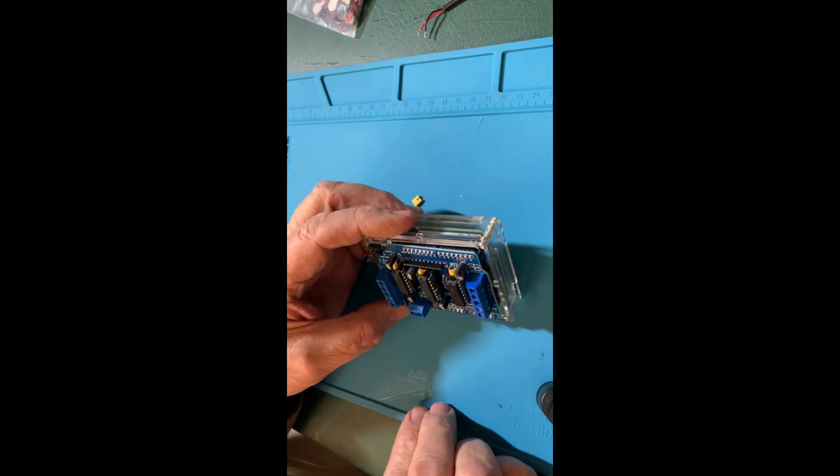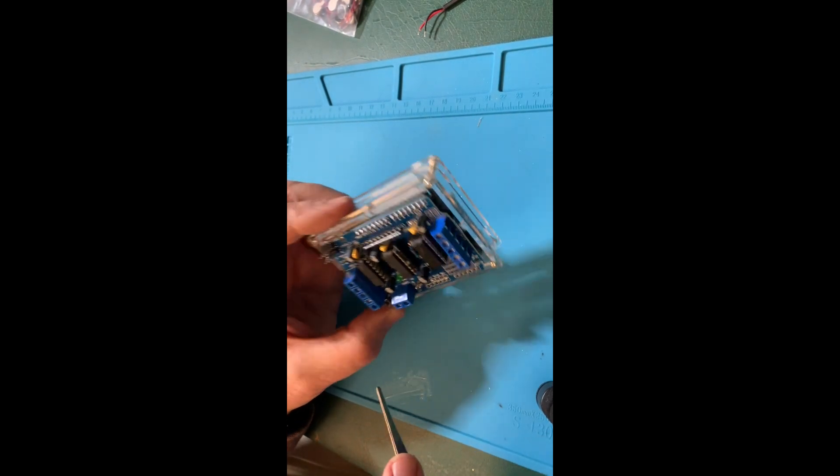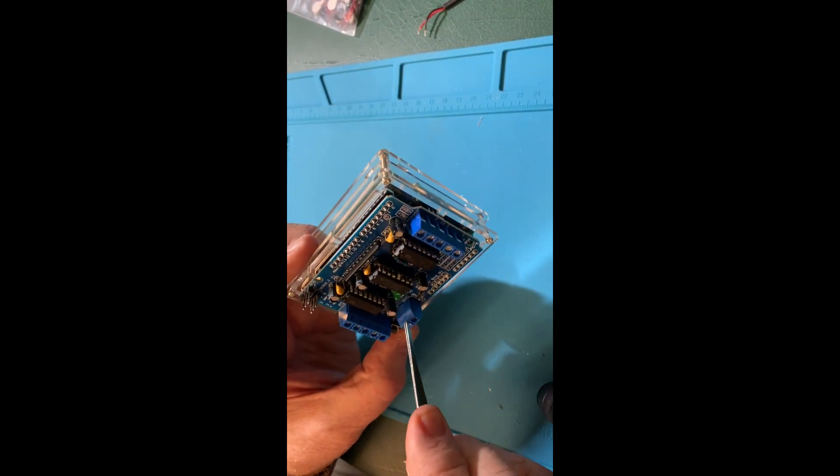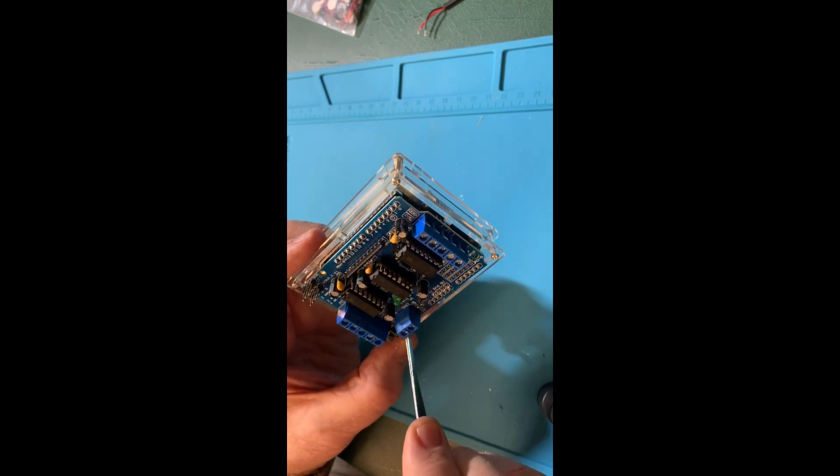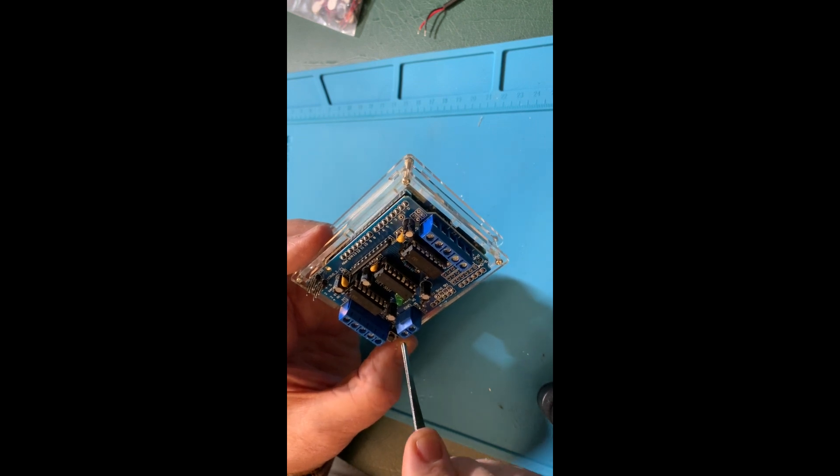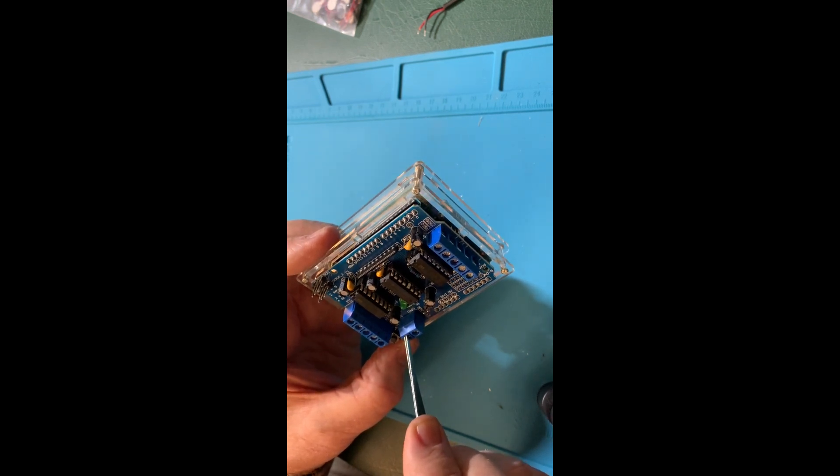And the way we are going to do that, let me point out right here, it says ground. So this is where we're going to attach power. Black goes to ground. Red goes to M plus.